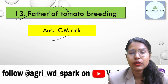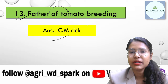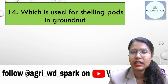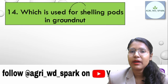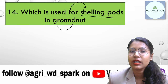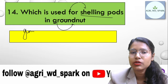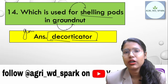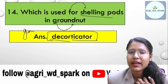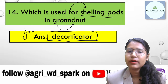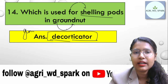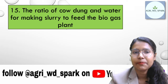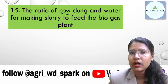The father of tomato breeding is CM Rick. Next, for shelling the pods in groundnut, the equipment used is called a decorticator. The job of the decorticator is to remove the pod from the groundnut.